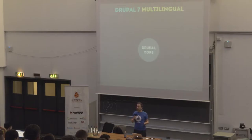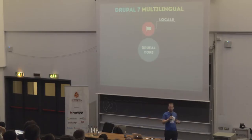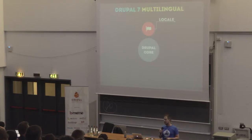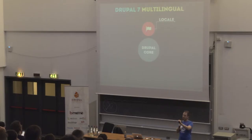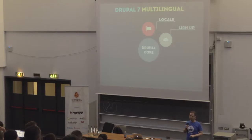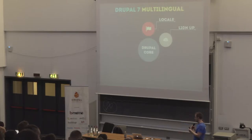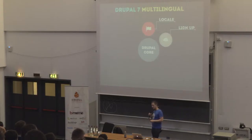In Drupal 7, you kind of have Drupal core which does not really understand language. Then you enable the locale module, which lets you track the list of languages and import translations for the interface. But if you have 100 modules and 10 languages, you need to manually identify each module's version, go to localize.drupal.org, download translations for each language — essentially manually download and import 1,000 files through a browser. We built a module called Localization Update that automates that process and identifies versions and downloads translations automatically.